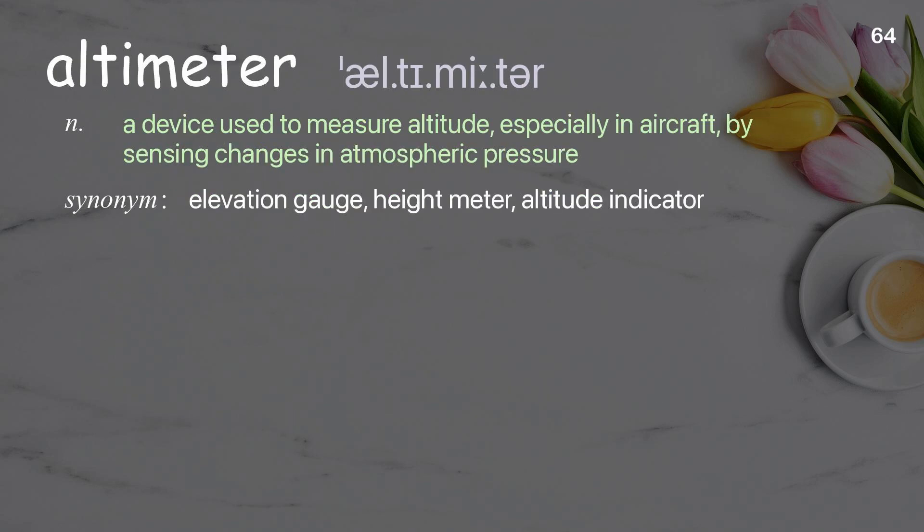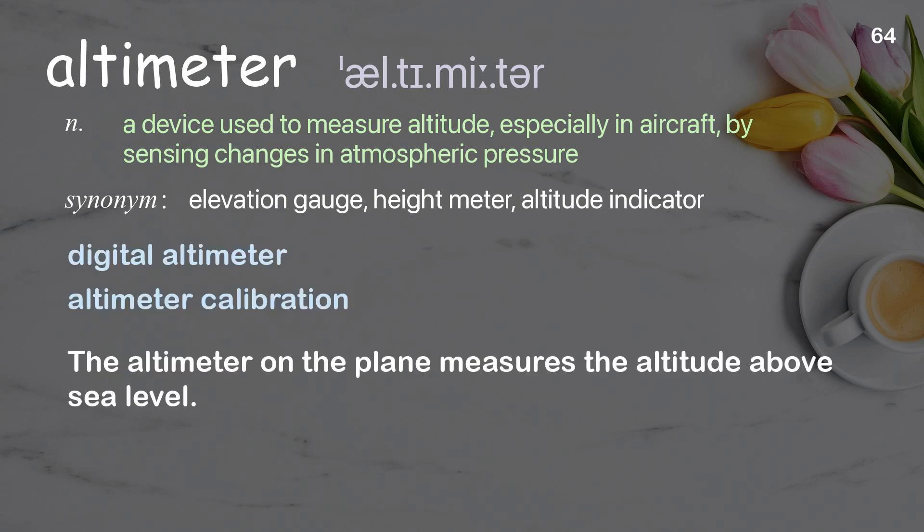Altimeter: A device used to measure altitude, especially in aircraft, by sensing changes in atmospheric pressure. Examples: Digital altimeter. Altimeter calibration. The altimeter on the plane measures the altitude above sea level.